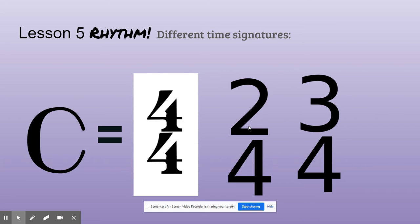I want you to look. I've got a 2-4 and a 3-4 time signature. I want you to tell me what do all three of these have in common? And what do all three of these have that are different?